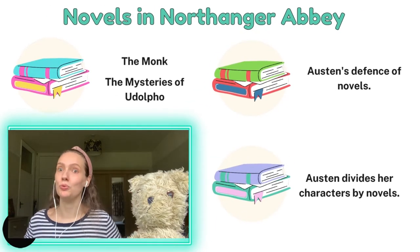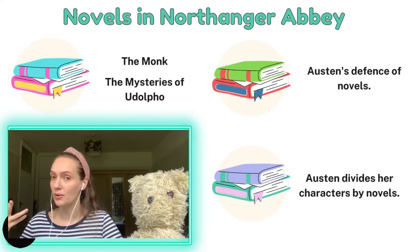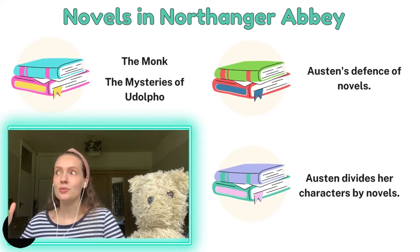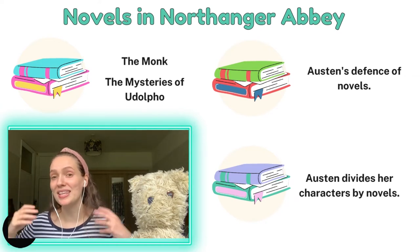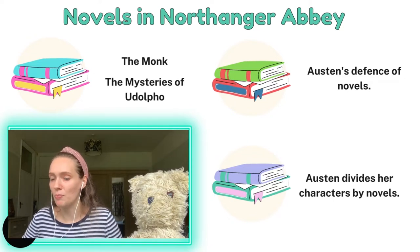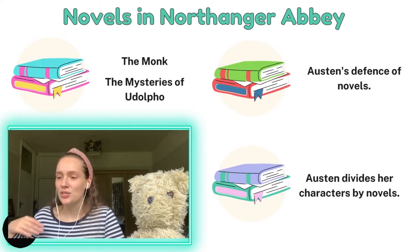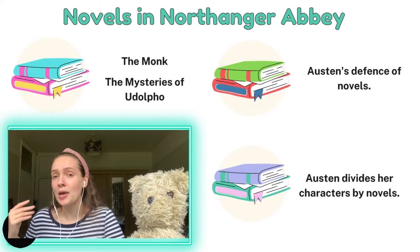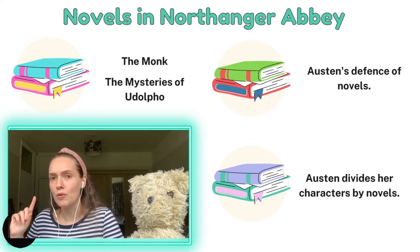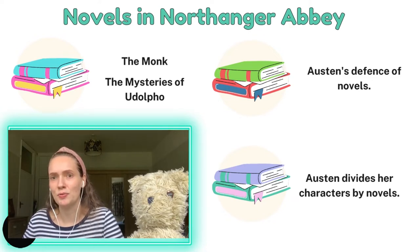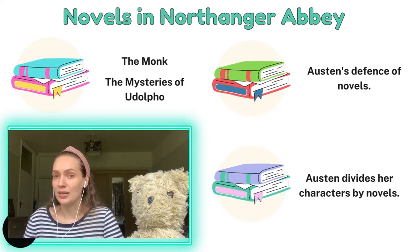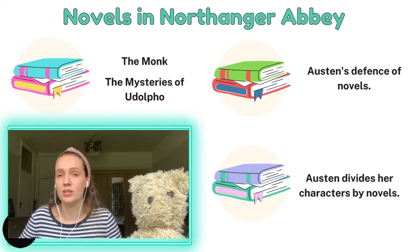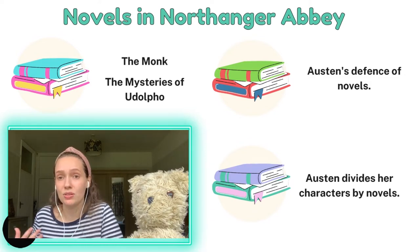Novels within Northanger Abbey are a huge theme. The two main novels referenced — which would have been very well known to contemporary readers — are The Monk and The Mysteries of Udolpho. Northanger Abbey is kind of a satire of this style of book. But Austen also comes in defence of novels: she breaks the fourth wall and speaks directly to her readers, going on a bit of a rant saying novels are good, why do people keep disparaging them? She also divides her characters by their opinions on novels — some think reading is a waste of time, others value it greatly.